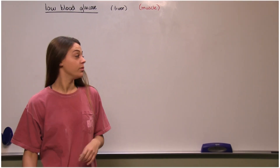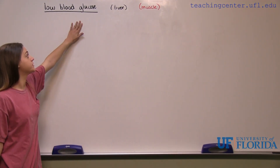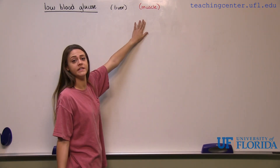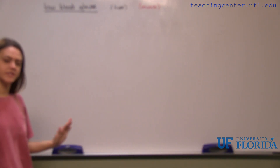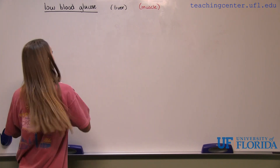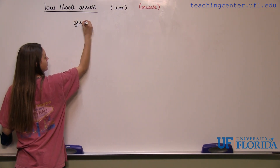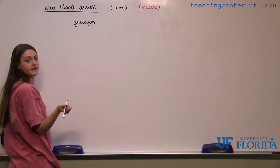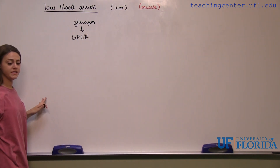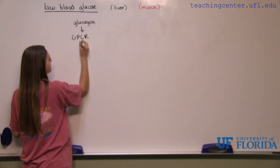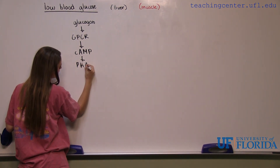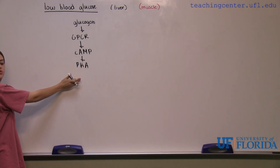Continuing on with carbohydrate regulation, we are now going to discuss low blood glucose in both the liver and the muscle. For the liver we'll have it written in black, and for the muscle we'll have it written in red. There are only a few minor differences between the two. When you have low blood glucose, your hormone is going to be glucagon. In the liver, glucagon is going to bind to its GPCR, which is a G protein coupled receptor. The GPCR is then going to activate cAMP, which is then going to activate PKA, which is protein kinase A — a kinase that phosphorylates things.